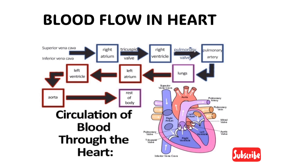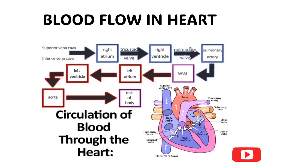In the lungs, the blood gets oxygenated. After getting oxygenated, the blood moves to the left atrium, then to the left ventricle, from the left ventricle to the aorta, and from the aorta to the rest of the body parts. All this blood flow is carried out through the blood vessels.